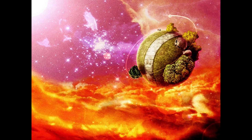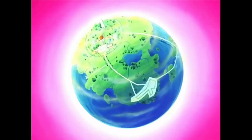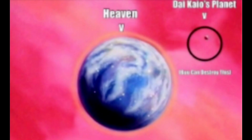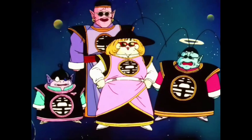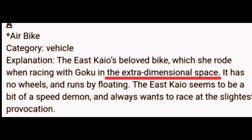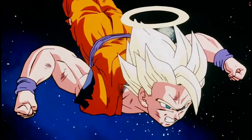Now on to the Grand Kai's planet — this planet is huge since it is comparable in size to heaven, which we established is the size of the entire universe. And this planet also has its own dimension, because one of the rooms in his mansion is described in the Daizenshuu to be an extra dimension — and keep in mind this dimension has stars and planets in the background.